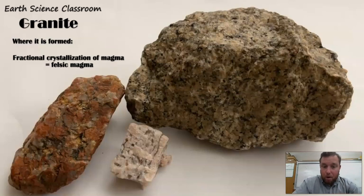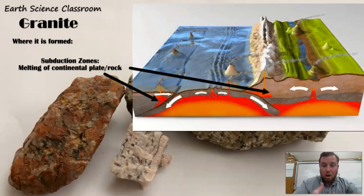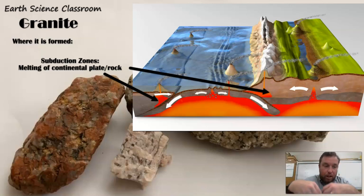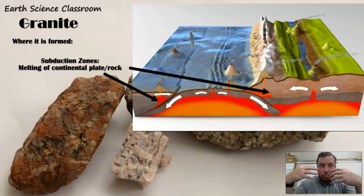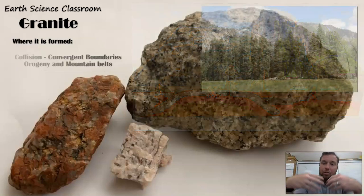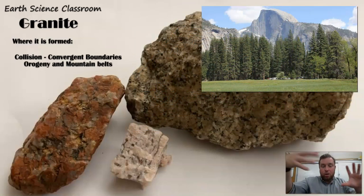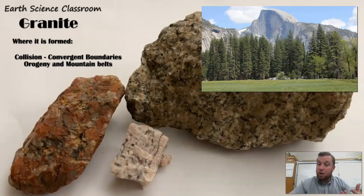Granite can also form through subduction — through the melting of continental plates in subduction zones with the addition of water, which lowers the melting temperature. You can also have formation through continents colliding, with pressure and melting under orogenic belts. Like the Himalayas might have a section of granite formed, and most mountain belts and ranges on the continents have a large granite composition.